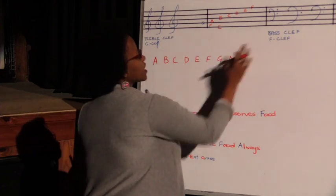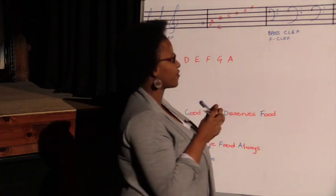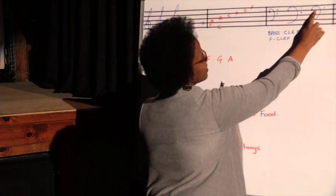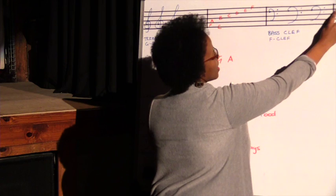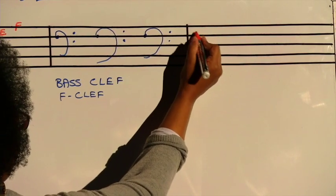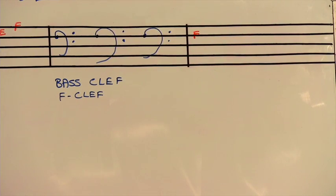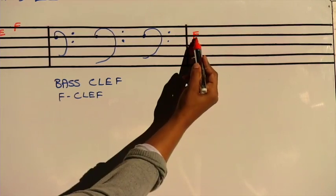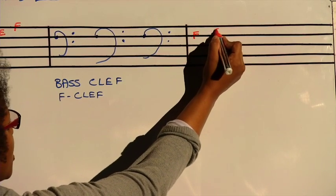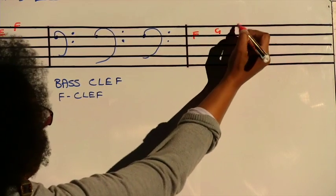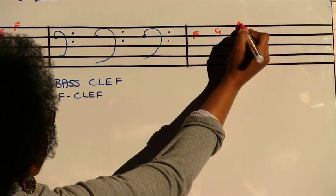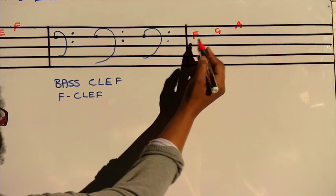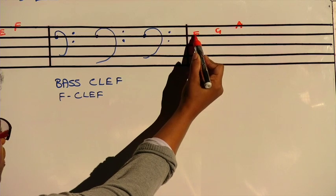Now looking at our bass clef, as I said, that line, the second line from the top, is called an F. Now if we look at our letter names, when we are going up, then from F it's going to be G in the space, then A on the line. Then we go backwards from F.